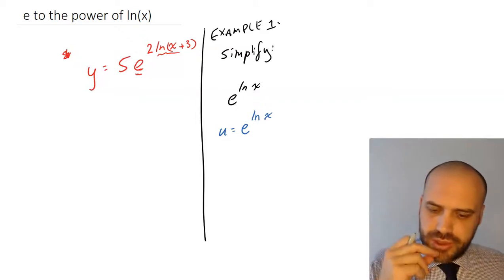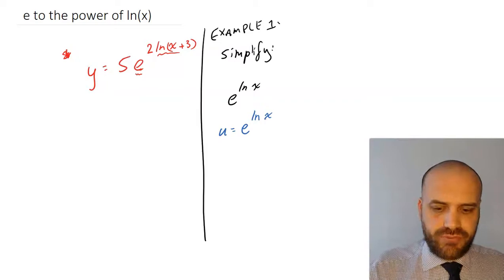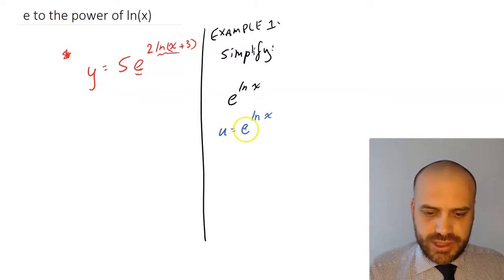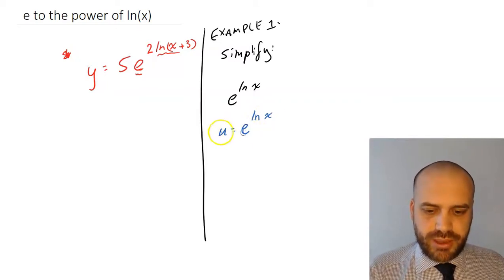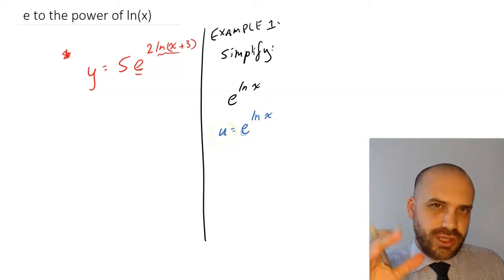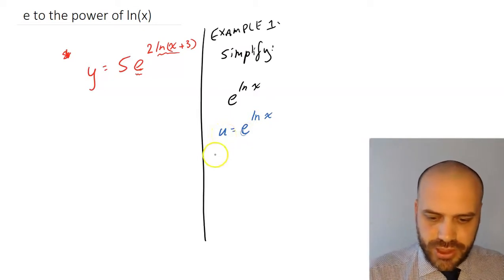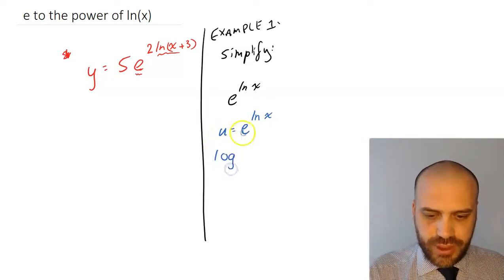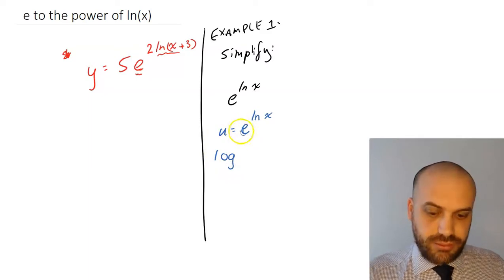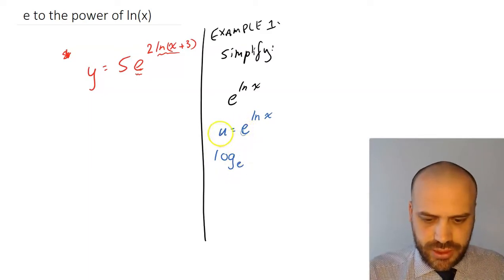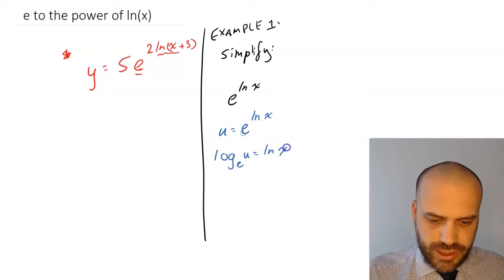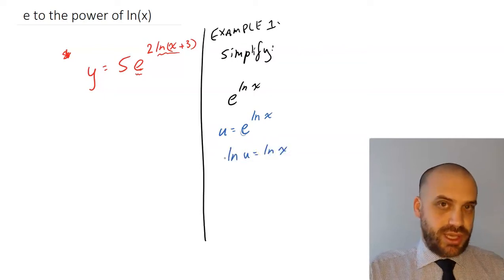So how can I do this? Well, let's write it in logarithmic form. So remember, this is something being raised to a power is equal to this thing. So to write that in logarithmic form, we take the log base of the base, u equals ln x.